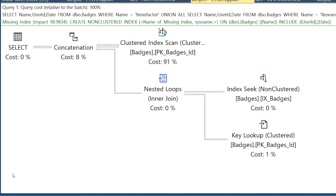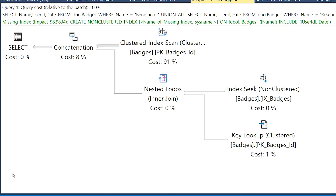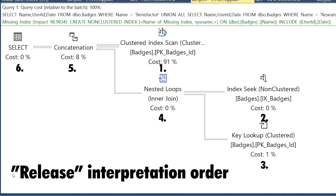In short, you can read execution plans from right to left, top to bottom, by following the arrows of the plan. Right to left, you're following the flow of data. While the calling structure of these operators actually has the operators going from left to right, each operator releases a row of data to the operator connected to its left until all rows have been released. You keep doing this until you reach the top left operator, which is usually a SELECT, INSERT, UPDATE, or DELETE.